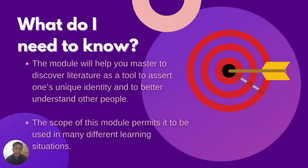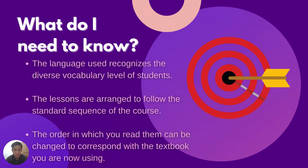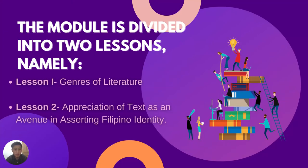After the learning objectives, we have now the 'What do I need to know?' section. The module will help you master discovering literature as a tool to assert one's unique identity and to better understand other people. The scope of this module permits it to be used in many different learning situations. The language used recognizes the diverse vocabulary level of students. The lessons are arranged to follow the standard sequence of the course.